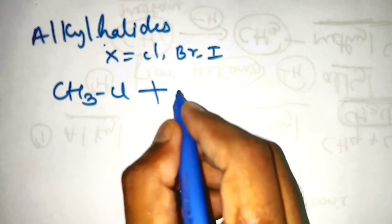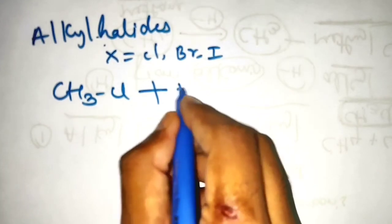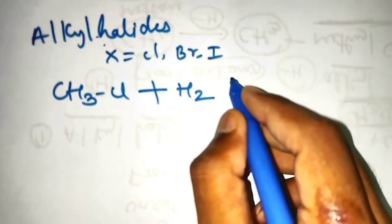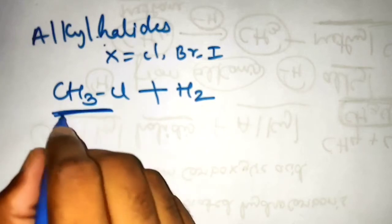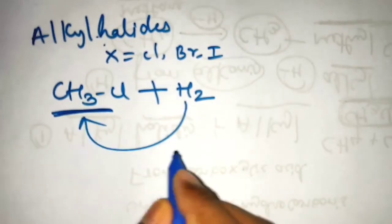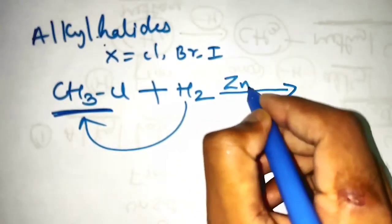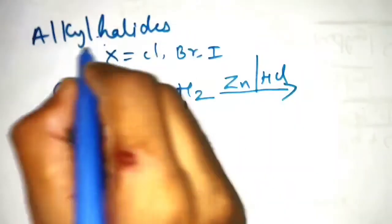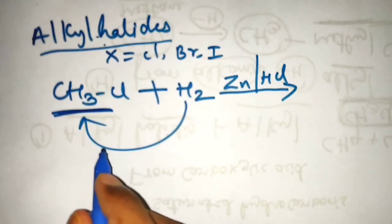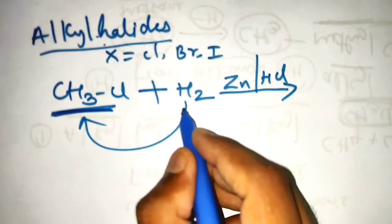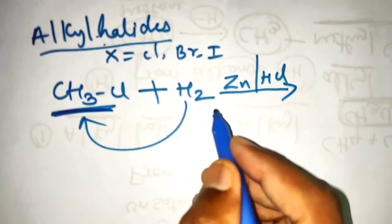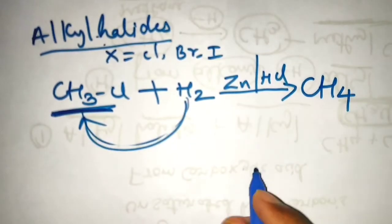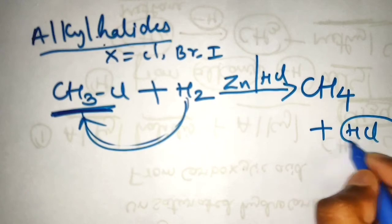Reduction means addition of hydrogen or removal of oxygen. So what we are going to do here is add hydrogen. We already know one hydrogen was removed to make the alkyl group, so if we add one hydrogen back, it will become alkanes again. In the presence of zinc and dilute HCl, this is the condition. The hydrogen will go over there and form CH4, that is the alkane, and HCl will be removed.